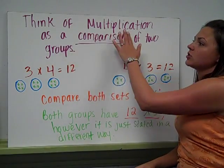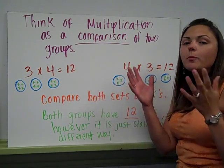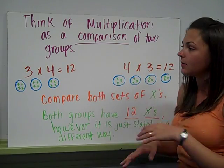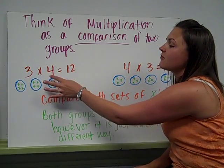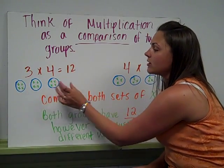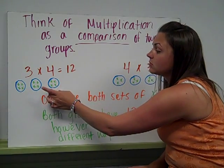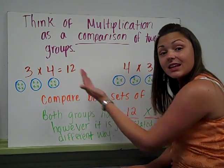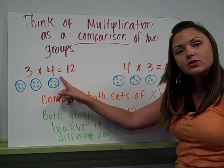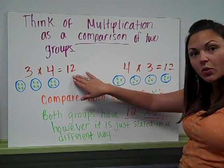I want you to think of multiplication as a comparison of two groups. When you compare two things, you look at how they're alike. So if I have 3 times 4 equals 12, I'm comparing three groups of 4 to 12. If I have 3 groups of 4, that compares to 12 because they equal each other. This is why I have the equal sign here. Because this is the same thing as 12.